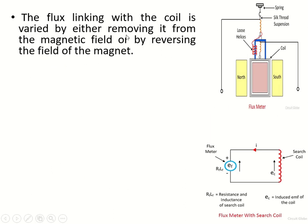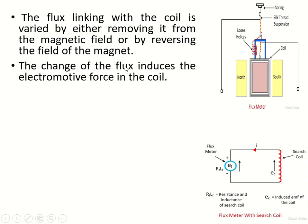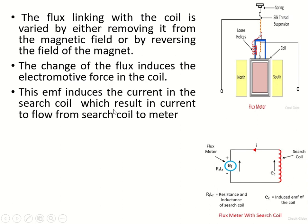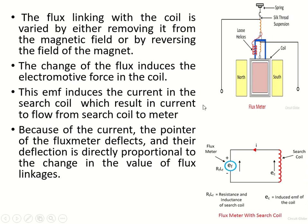The flux linking with the coil is varied either by removing it from the magnetic field or reversing the field of the magnet. There are two methods: continuously reversing the north and south poles, or by removing and inserting your search coil. This change in flux induces an EMF in the search coil, which then induces a current in it.